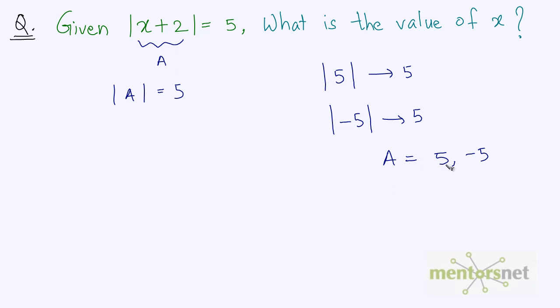So x plus 2 can be equal to 5 or x plus 2 can be equal to minus 5. So x equals 5 minus 2 that is 3, or x equals minus 5 minus 2 that is minus 7. Therefore the values x can take are two values which is 3 and minus 7.